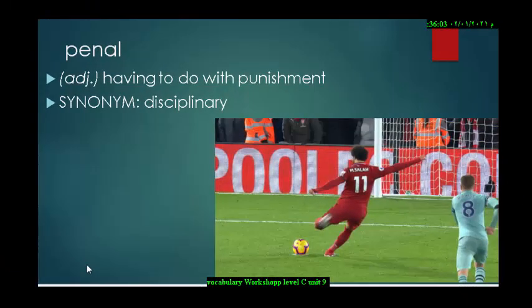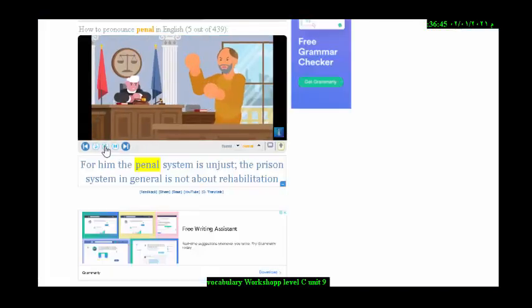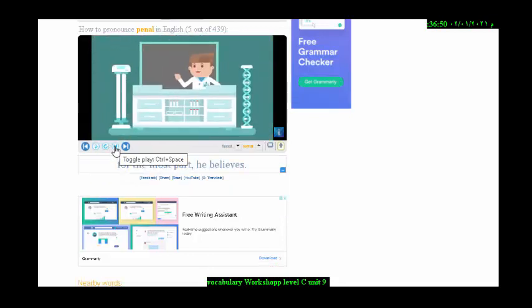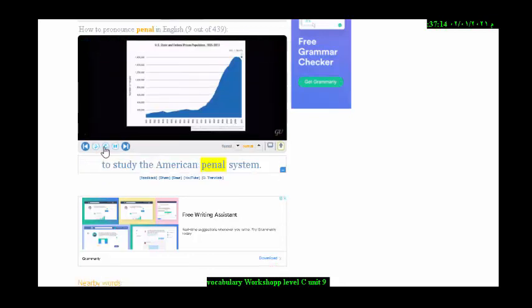Next word is penal, which is an adjective. That means having to do with punishment or disciplinary. For him, the penal system is unjust. The prison system in general is not about rehabilitation for the most part, he believes. To study the American penal system.